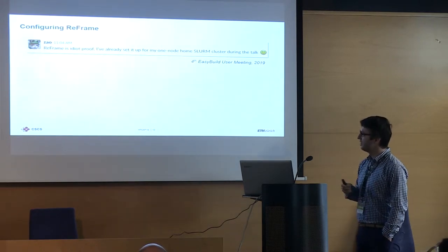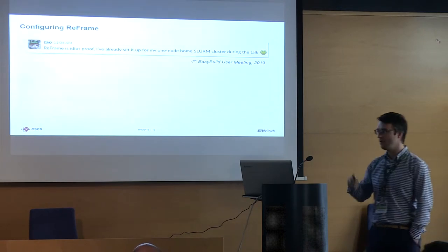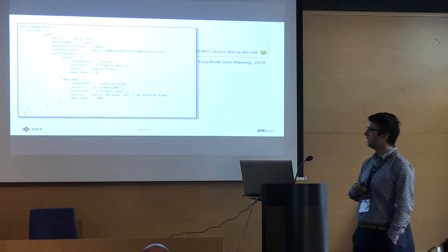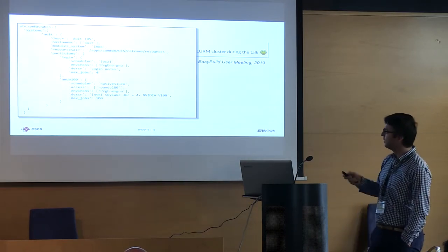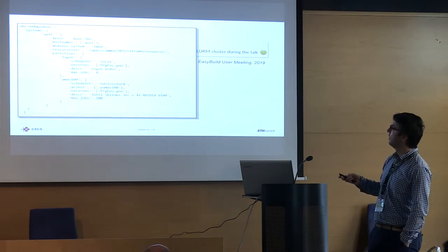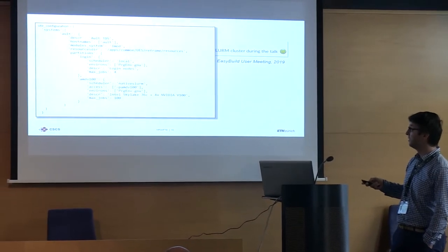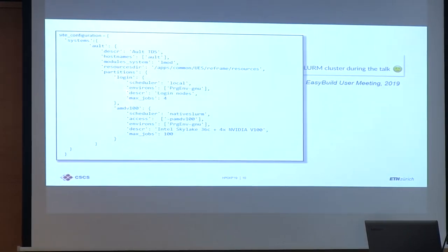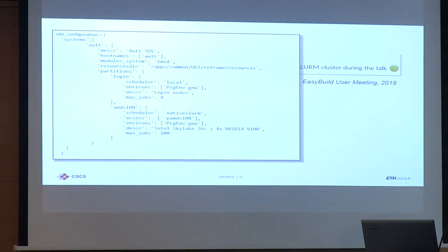Here is how a configuration looks like — it's a real configuration from one of our TDS systems, a Frankenstein system with several partitions with different hardware. You specify the module system you're going to use, where large files needed for resources might be, and then you specify partitions — these are logical partitions, not necessarily scheduler partitions. You can say you have login nodes with a local scheduler. You define your programming environments; I'm using Cray naming conventions. The max jobs option limits concurrency so ReFrame won't spawn more than four jobs on that partition.